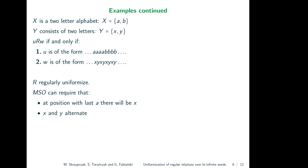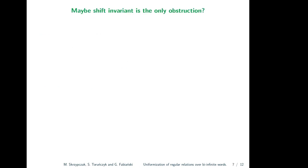The phenomenon here is more general: whenever the input word has some distinguished position, you can use that position to uniformize everything. Because on a single infinite word everything uniformizes, you can use this distinguished position from the input to split your bi-infinite word into two parts and uniformize them independently. This suggests a hypothesis: maybe shift-invariance is the only obstruction to uniformization — whenever a language does not admit uniformization, the obstruction always comes from problems with shifts.